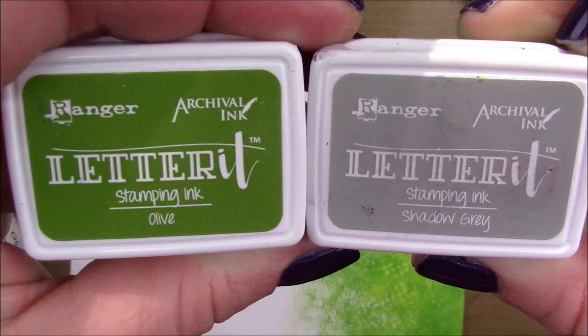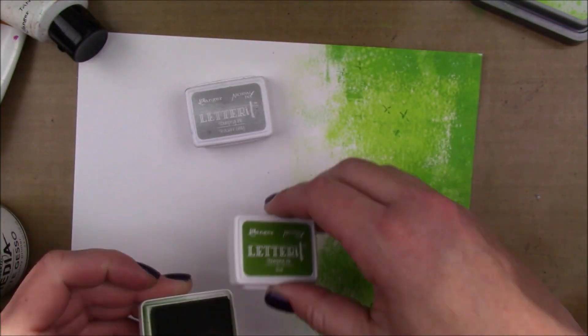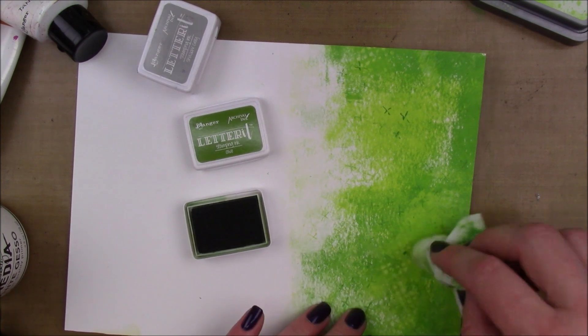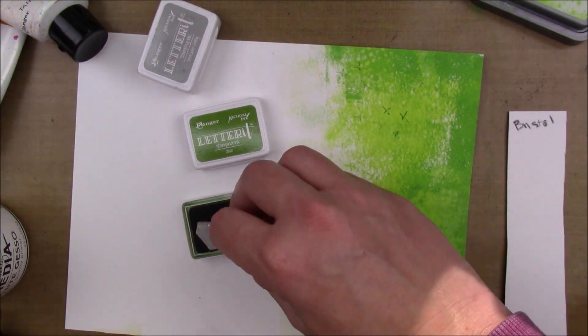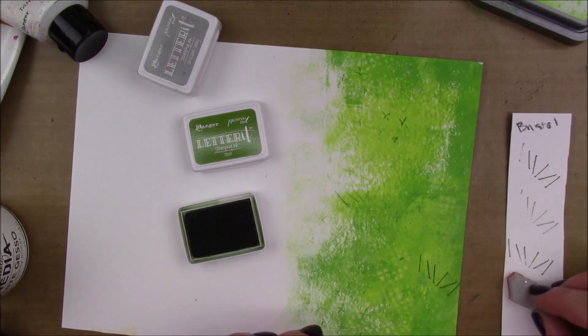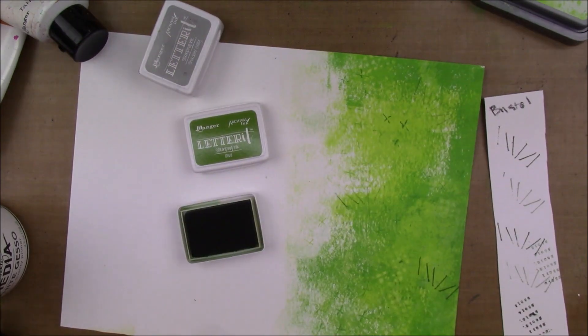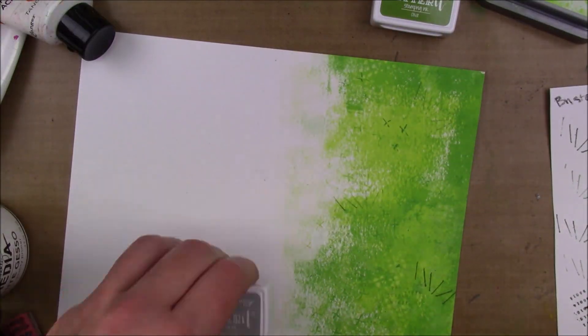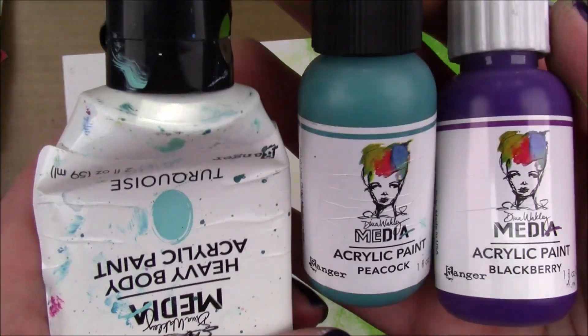Then I got out some Archival ink in Olive and Shadow Gray. These are the little Letter It stamp pads, the mini stamp pads. Then I started to stamp with this Viva Las Vegas stamps. It looks supposed to look like staples, but it was really dark so I thought I'd just do some second-generation stamping. I stamped off on a piece of cardstock first and then stamped onto my project.